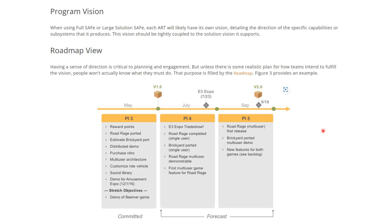That purpose is filled by the roadmap. The roadmap is nothing but the sequential arrangement of program increments — your grouping of PI objectives you want to achieve in a particular program increment, and how you are aligning with the milestones.